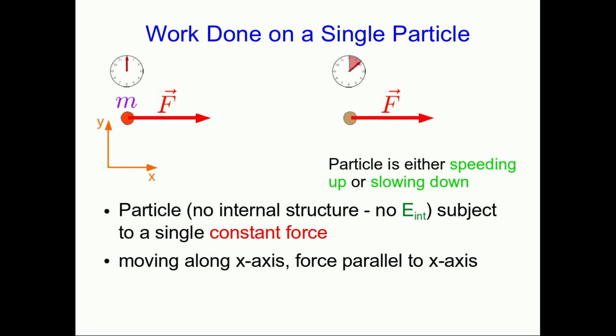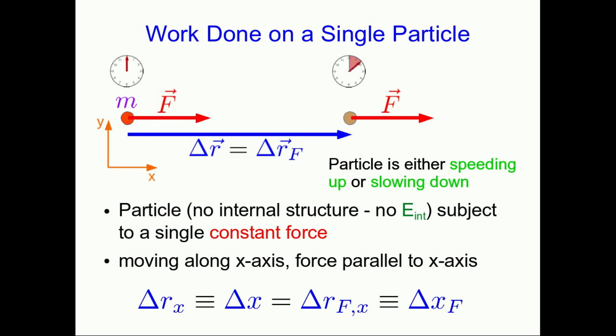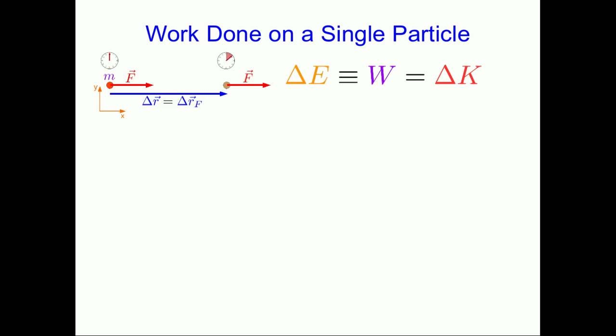Because the particle is moving along the x-axis and the force is parallel to the x-axis, this particle must be either speeding up or slowing down, so its kinetic energy is changing. We can also see that because the force acts right at the particle, the displacement of the particle is the same as the force displacement vector. So the x-component of the displacement, which we'd call delta x, is the same as the x-component of the force displacement vector, delta x_f. The force itself is just some x-component of the force times i-hat, where that x-component must be either the magnitude or the negative magnitude of the force.